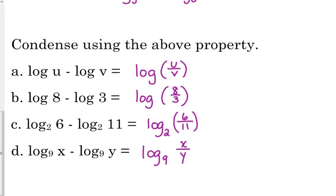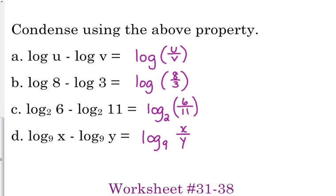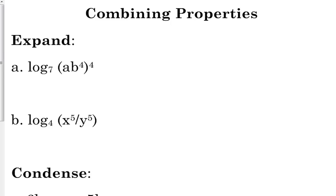A lot of times with the quotients they don't necessarily put parentheses around them because that one's pretty obvious that all of that should be inside the log. It's more when you're multiplying that they put parentheses around to make sure that you know all of this is inside the logarithm or this is not inside the logarithm. So here if we have log base 7 of ab to the 4, to the 4th.